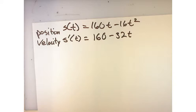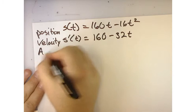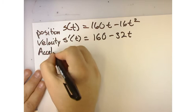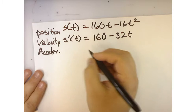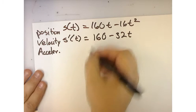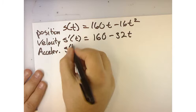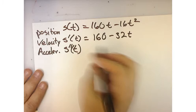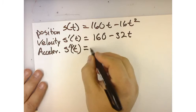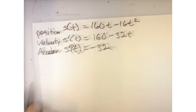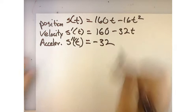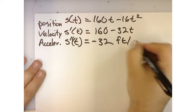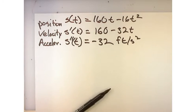So acceleration is the rate of change of the velocity. So the rate of change of velocity would be S double prime, which is the derivative of velocity, which is negative 32 feet per second squared.